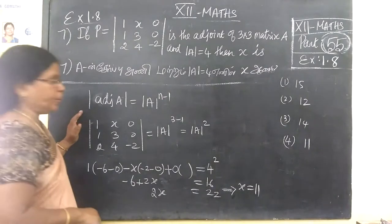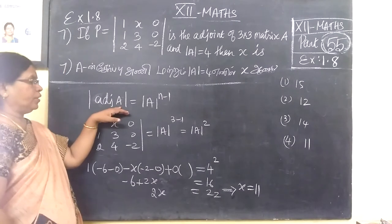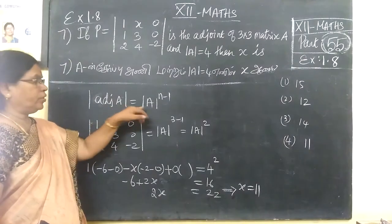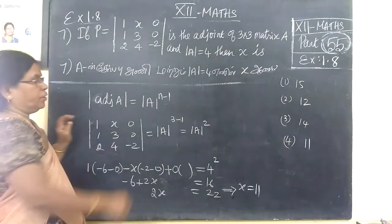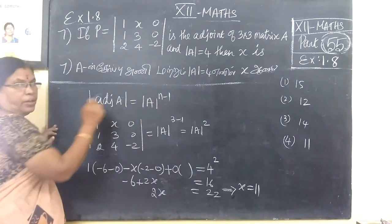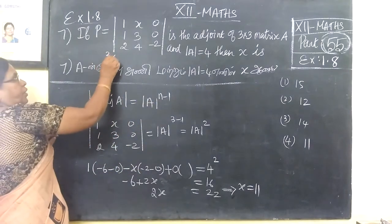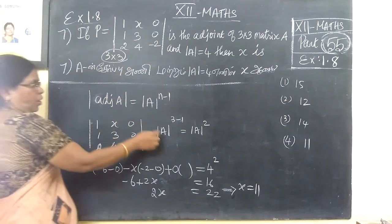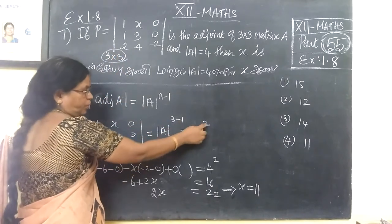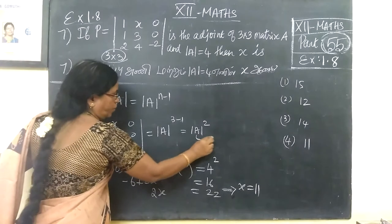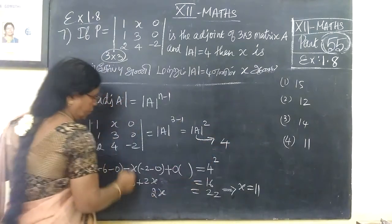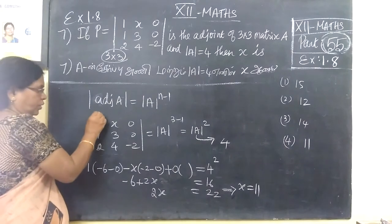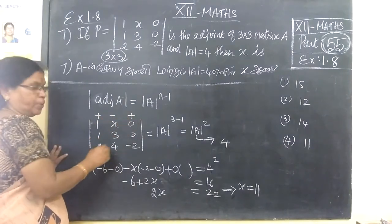This question, how are we going to do it? Determinant of A is equal to n minus 1. N is the order. Order is 3 by 3. So order is 3. So 3 minus 1 is equal to 2.